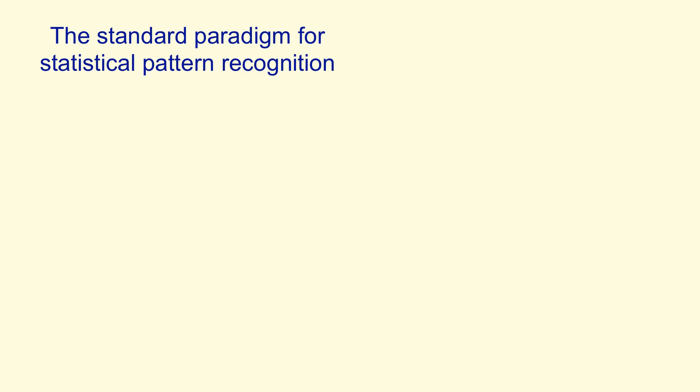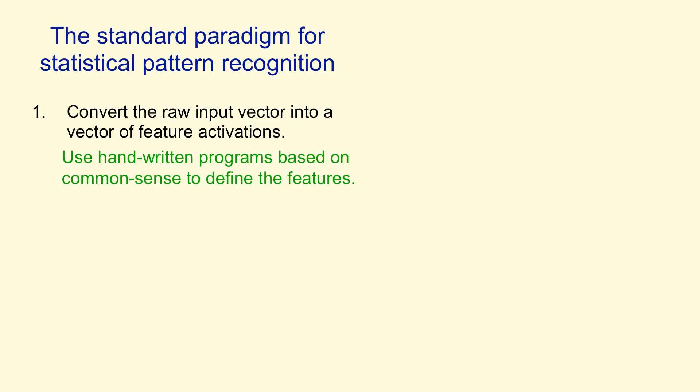In statistical pattern recognition, there's a standard way to recognize patterns. We first take the raw input and convert it into a set or vector of feature activations. We do this using handwritten programs which are based on common sense. So that part of the system does not learn.